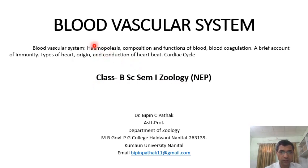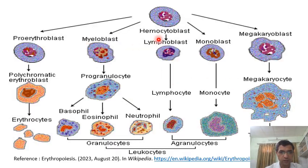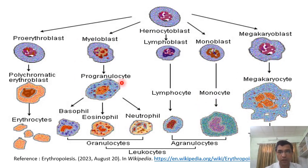Hematopoiesis — the word comes from 'heme', meaning iron, and 'poiesis', meaning the formation of blood. So hematopoiesis means the formation of blood. Basically, hematopoiesis occurs in the bone marrow.